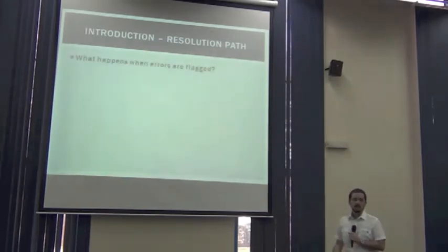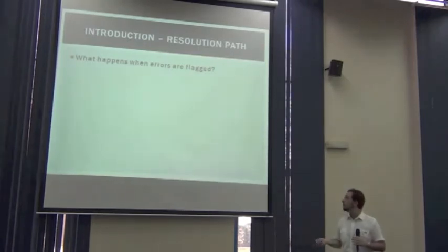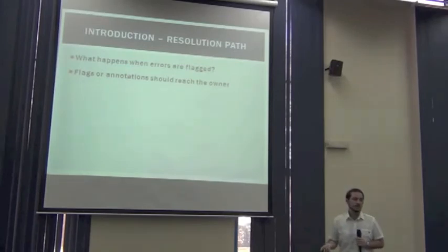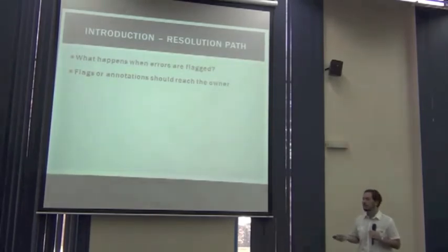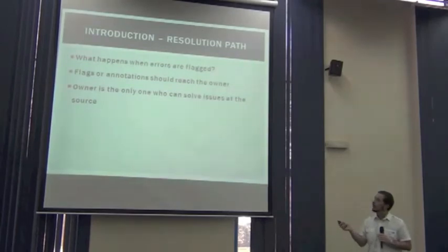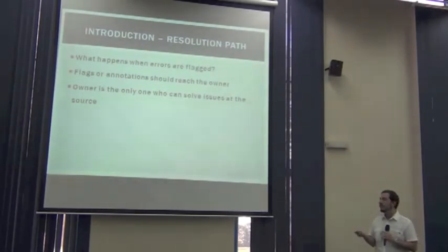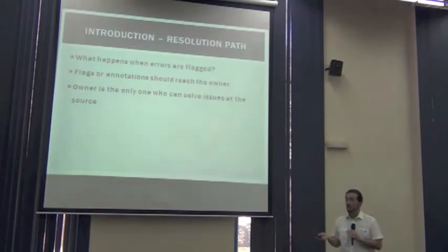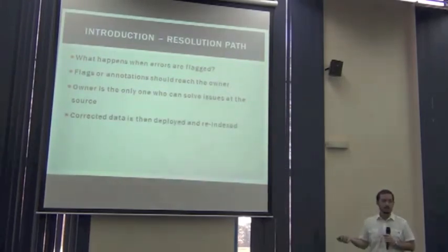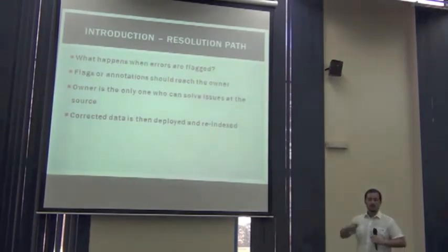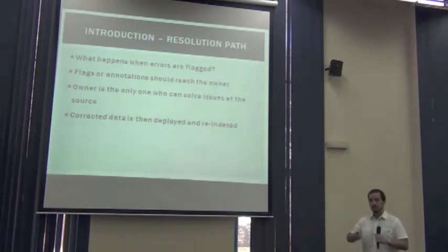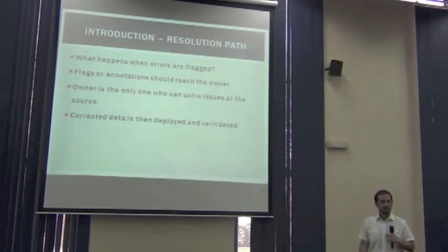What happens when errors are flagged? First of all, flags or annotations should reach the original publisher. The owner of the data should be aware that there are some issues with their records, because he or she is the only one who can solve the issues at the source. The original publisher is the only person who has the ability to correct the information. Once the data is corrected and cleaning processes are applied, a new version of the data is published.